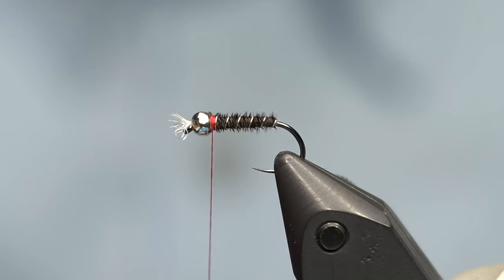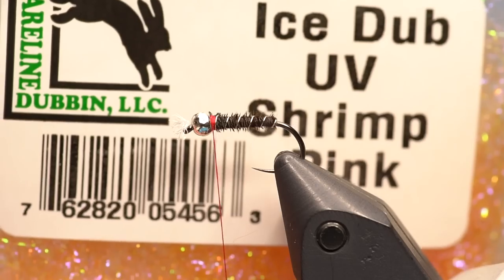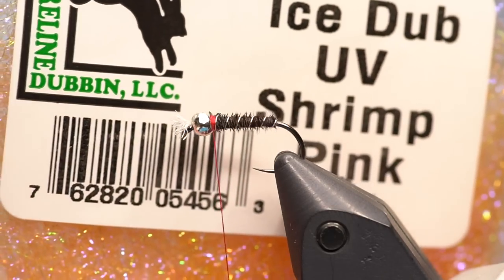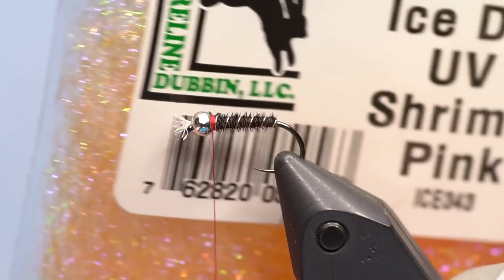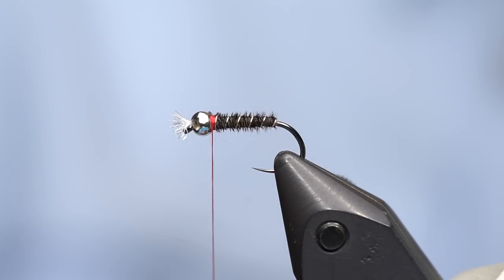The last step is to add one of the magic materials, the old UV shrimp pink ice dub. If you don't have some of this, you should buy about six bags because you're going to go through it fast. This is like magic fish potion. We're going to add some UV shrimp pink.